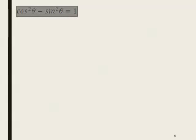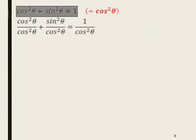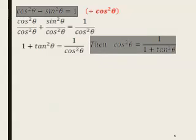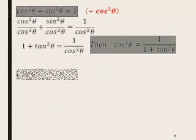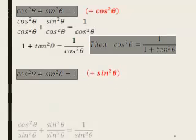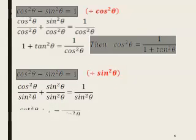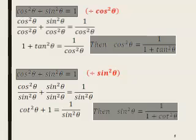Important rules you have to study: cosine squared alpha plus sine squared alpha is equal to 1. If you divide all the equation by cosine squared alpha, you get 1 plus tangent squared alpha equals 1 over cosine squared alpha, so cosine squared alpha equals 1 over (1 plus tangent squared alpha). Then, if you divide all the equation by sine squared alpha, you get sine squared alpha equals 1 over (1 plus cotangent squared alpha). Those are three rules that you have to study.